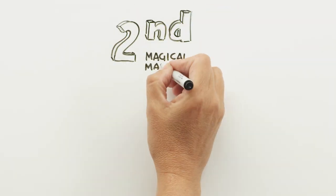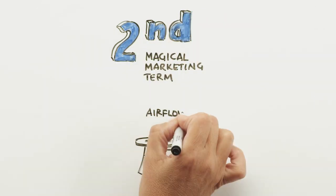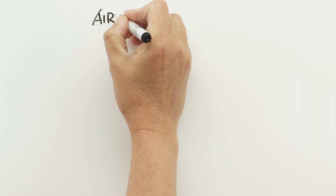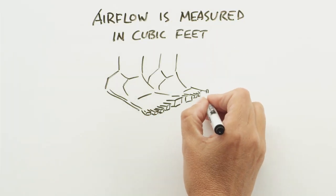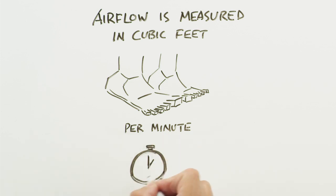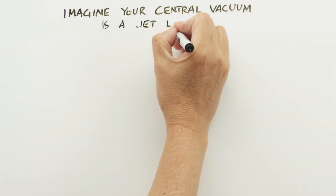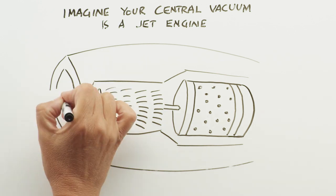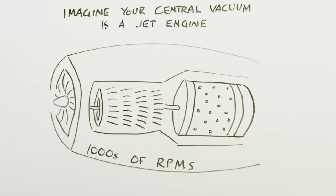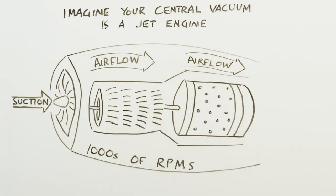The second magic marketing term that vacuum salespeople use to measure performance is air flow. Air flow is measured in cubic feet per minute. This measurement tells how much air the central vacuum motor can move. Imagine your central vacuum motor is like a jet engine. Turbine propellers are spinning at thousands of revolutions per minute, generating tremendous suction and producing a huge amount of air flow which is then exhausted.